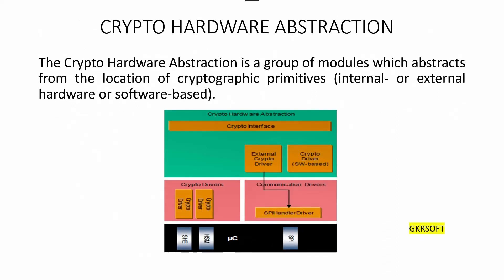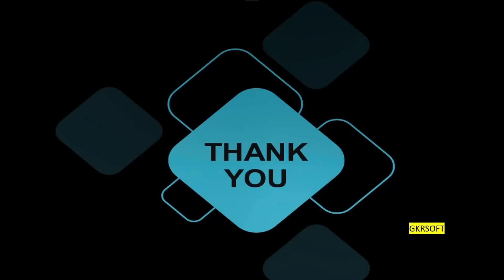Crypto hardware abstraction is a group of modules which abstracts from the location of cryptographic primitives — internal or external, hardware or software based. For example, an AES primitive is realized in SHE or provided as a software library. It will provide an equal mechanism to access internal and software cryptographic devices. This is microcontroller independent.